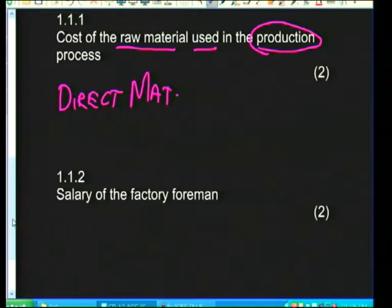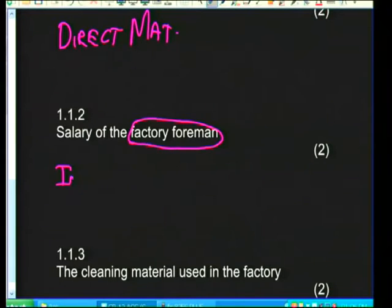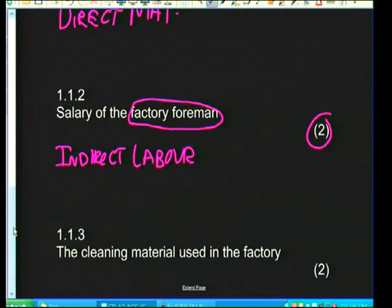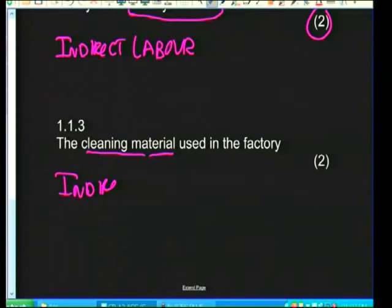The second item: the salary of the factory foreman. The factory foreman is a worker but does not make the actual product himself, so this cannot be direct labor — it has to be indirect labor, earning another two marks. The third item: cleaning materials used in the factory. As already explained, these are indirect materials.